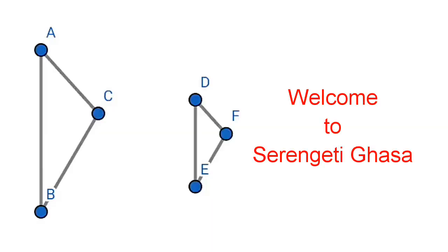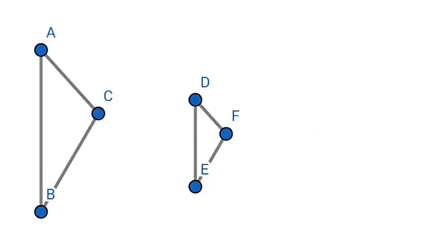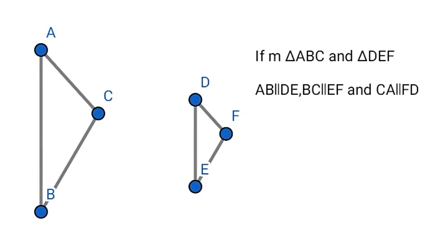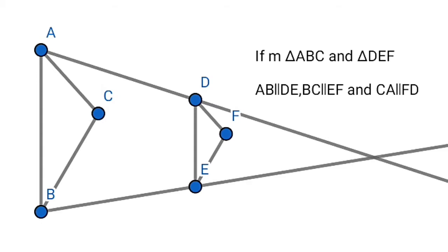Welcome to this channel. In this video, we will discuss a fact about similar triangles. In triangle ABC and triangle DEF, if AB is parallel to DE, BC is parallel to EF, and CA is parallel to FD, then the lines AD, BE, and CF meet at a point.